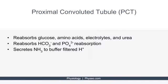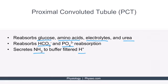Immediately after the glomerulus has filtered the plasma, the proximal convoluted tubule, or PCT, has the chance to reabsorb most of the substances secreted into the lumen, such as glucose, amino acids, electrolytes, and urea. The proximal tubule is also the location of bicarb reabsorption, which has implications for acid-base balance. It also reabsorbs phosphate, which plays a significant role in calcium homeostasis and bone development. The proximal tubule also generates and secretes ammonia, which buffers protons filtered from the glomerulus. As ammonia binds these protons, molecules of ammonium, NH4+, are generated.